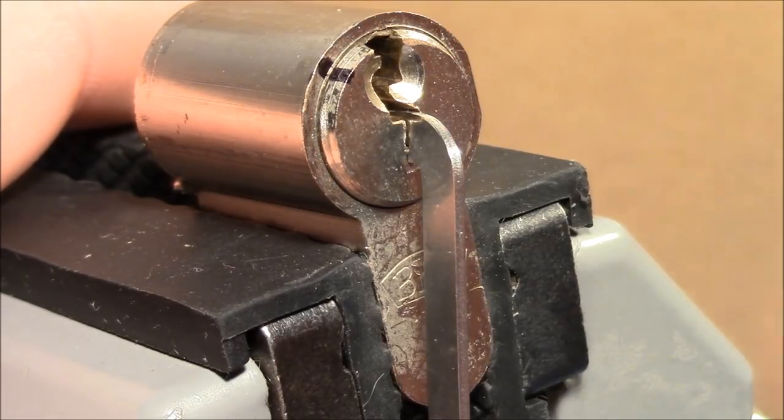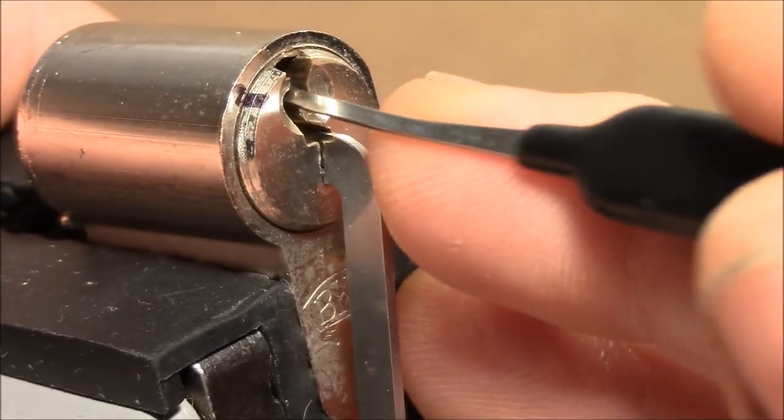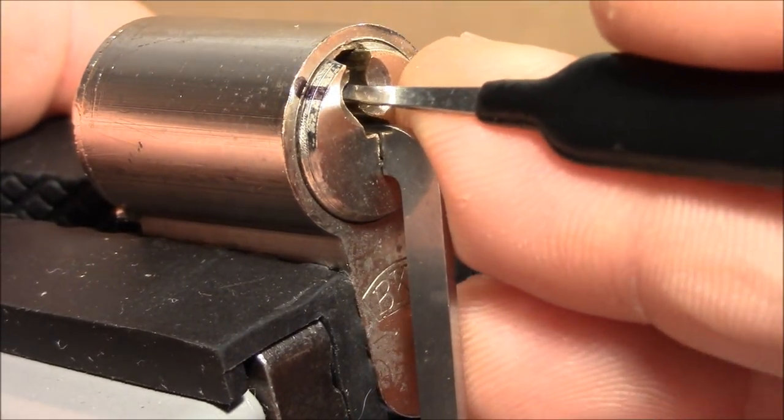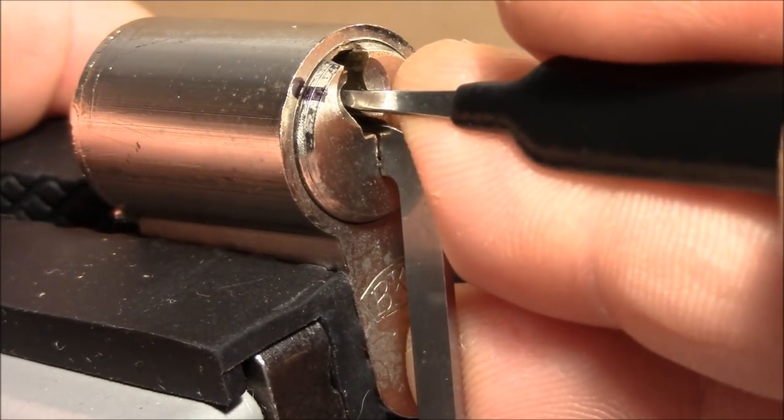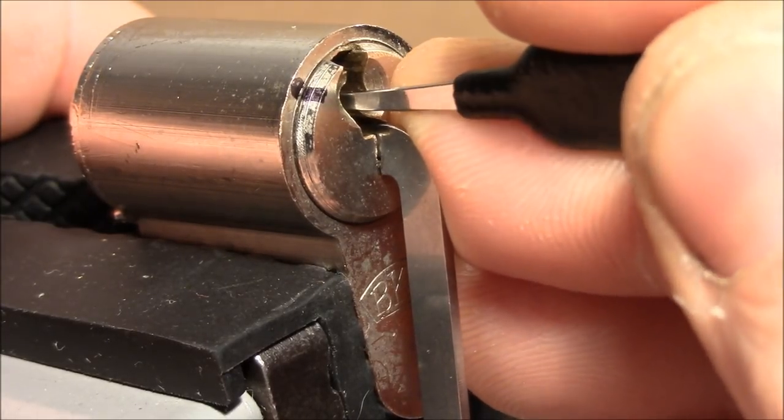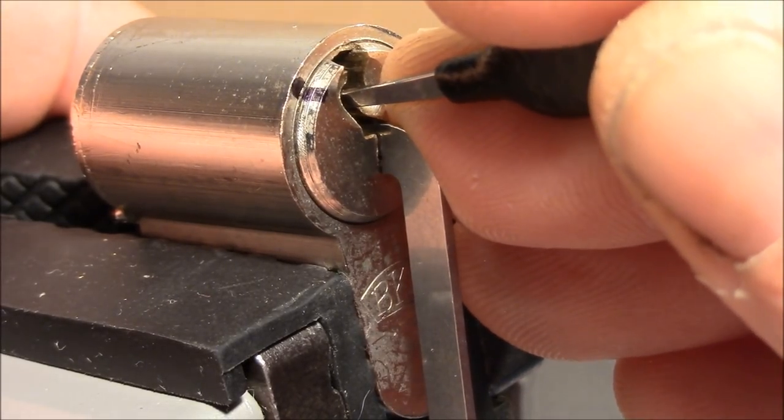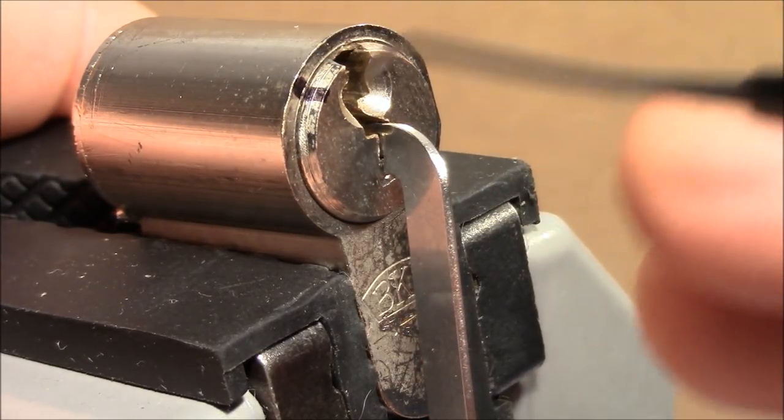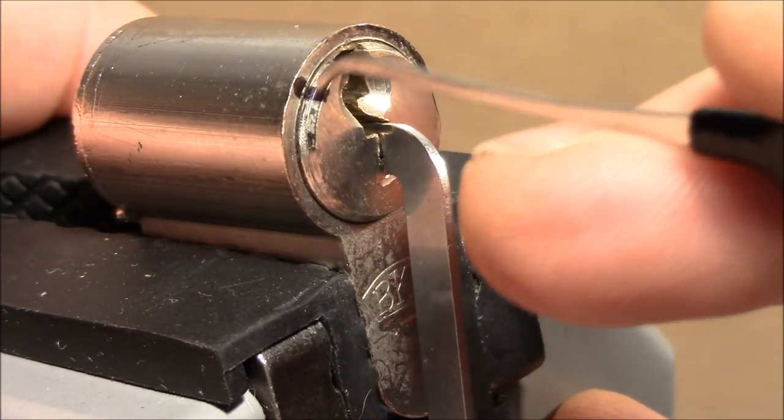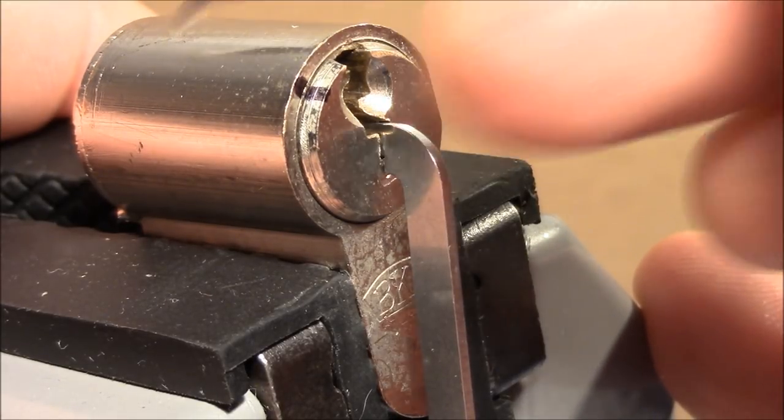Alright, so first I use this hook here to go in at an angle. And I can feel that all pins are springy but I stop at the last pin. So 5 is the first binder. Try to get my pick over 5. Release tension a little bit. And got it set. So I felt it on the tension wrench that the core turned a little bit. And this tells me if you set one standard pin and the core turns a little bit and it was definitely 5 and no other pin that this lock has not really tight tolerances.